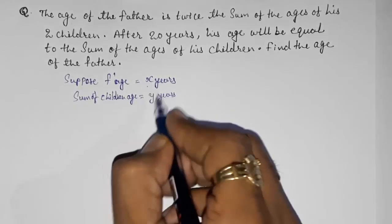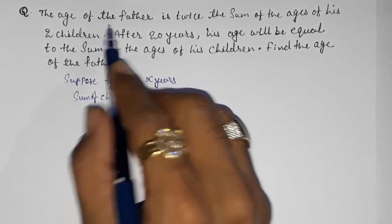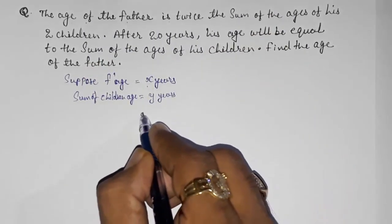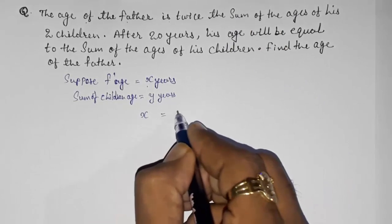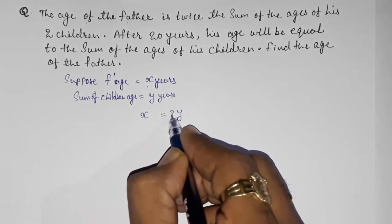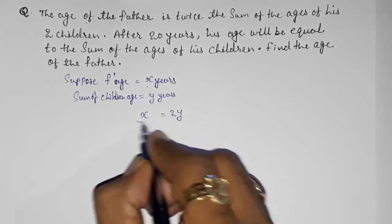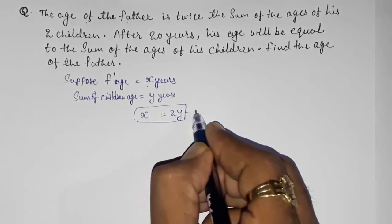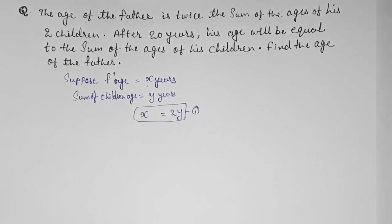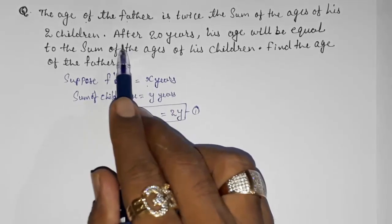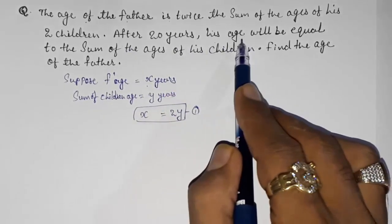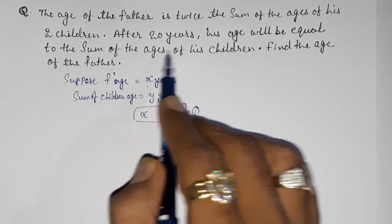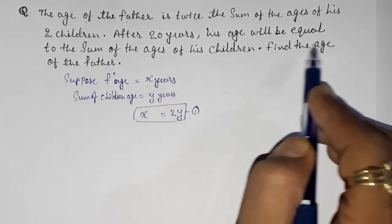The father's age is twice the sum of children's ages, so x equals 2y. This is equation one. After 20 years, the father's age will be x plus 20, and the sum of children's ages will be y plus 20 plus 20, which is y plus 40, since there are two children each gaining 20 years.